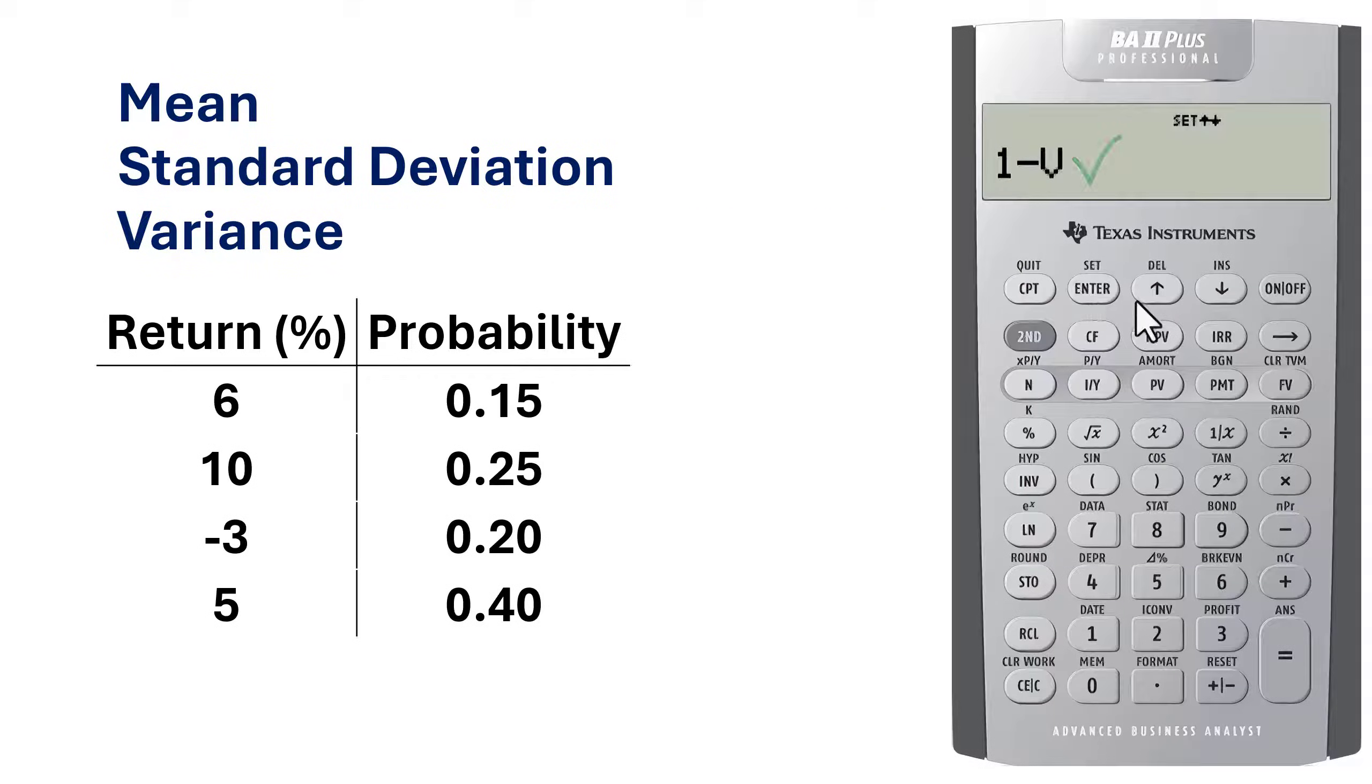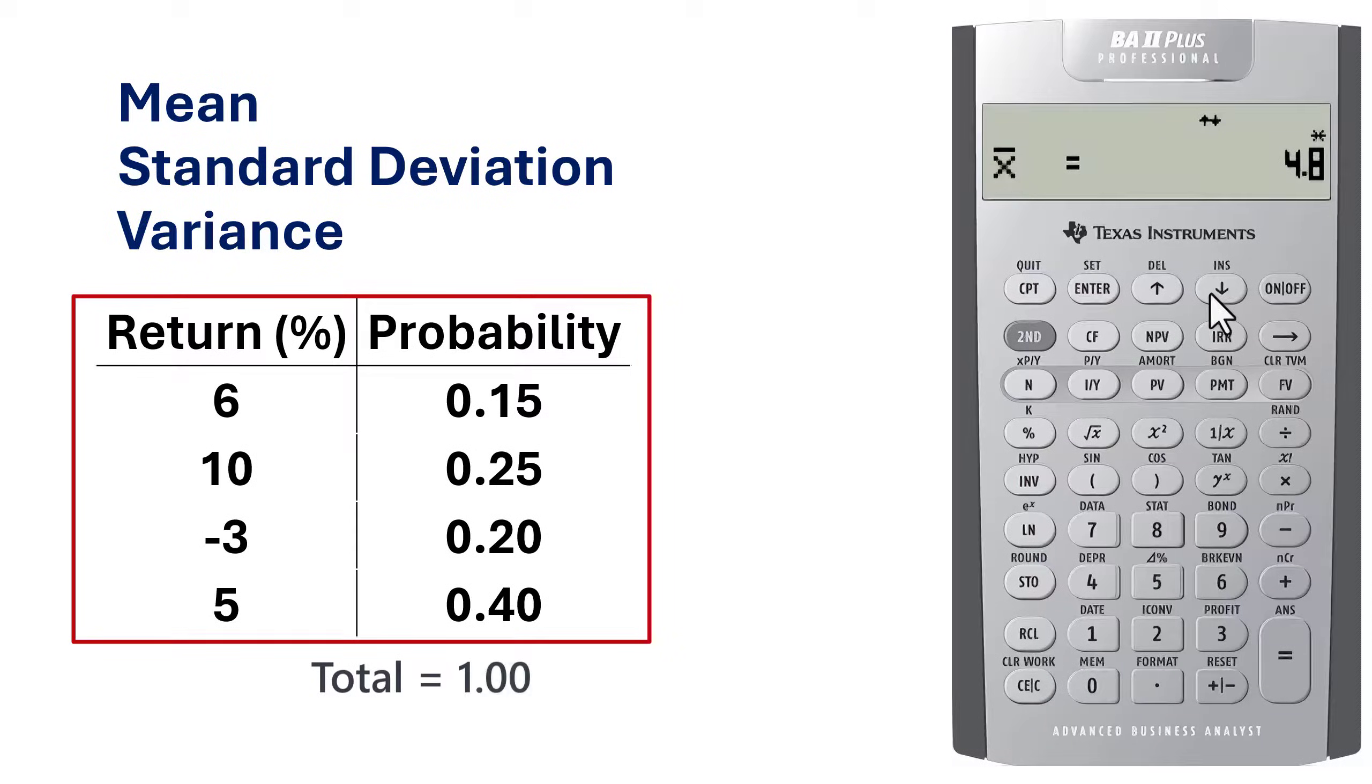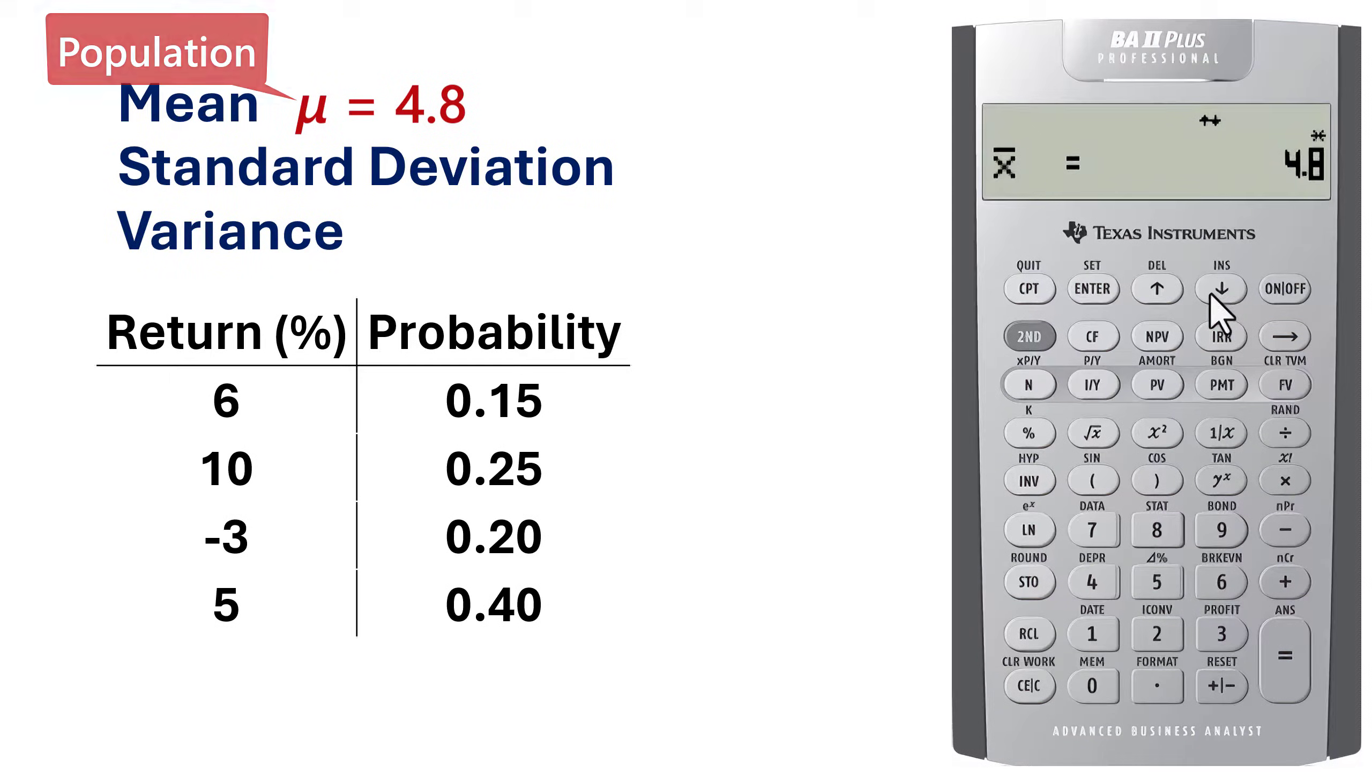Then scroll down. Here is the total percentage, which is 100. Scroll down. It shows the mean as 4.8. Since this is a probability distribution, 4.8 is the population mean mu, but the calculator by default displays X bar for the mean. But that doesn't affect the value.